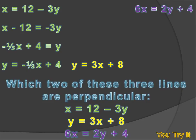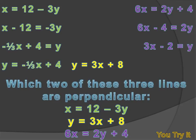For the third line, 6x equals 2y plus 4, we subtract 4 from both sides and then divide by 2, giving y equals 3x minus 2. The slope here is 3, the same as the yellow line y equals 3x plus 8, so this third line is parallel to the yellow line.